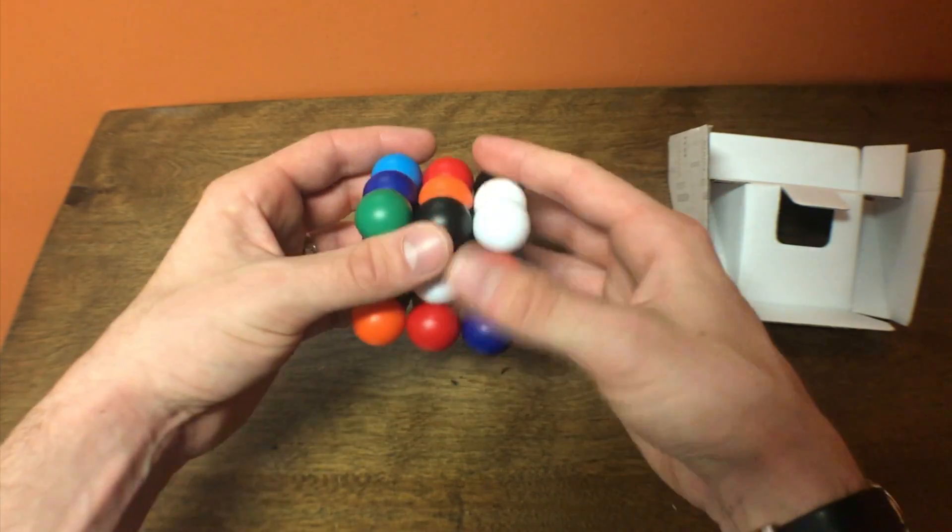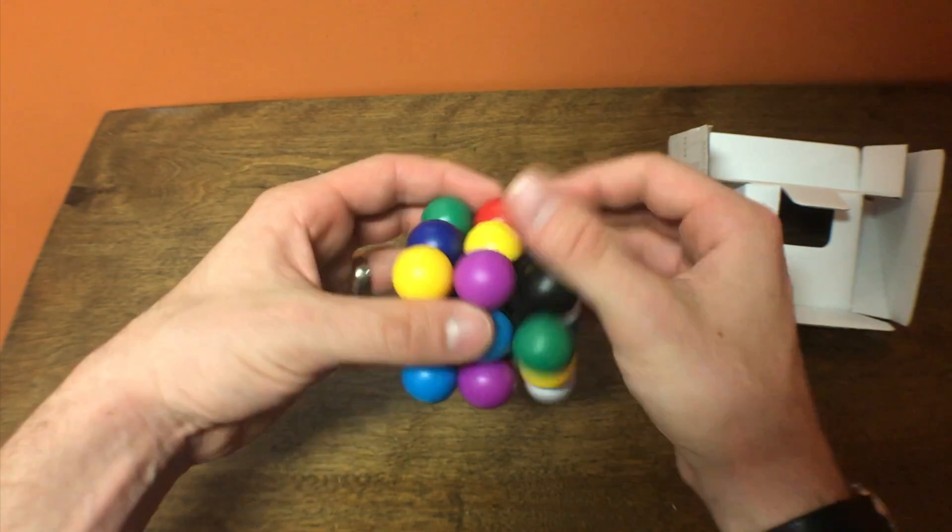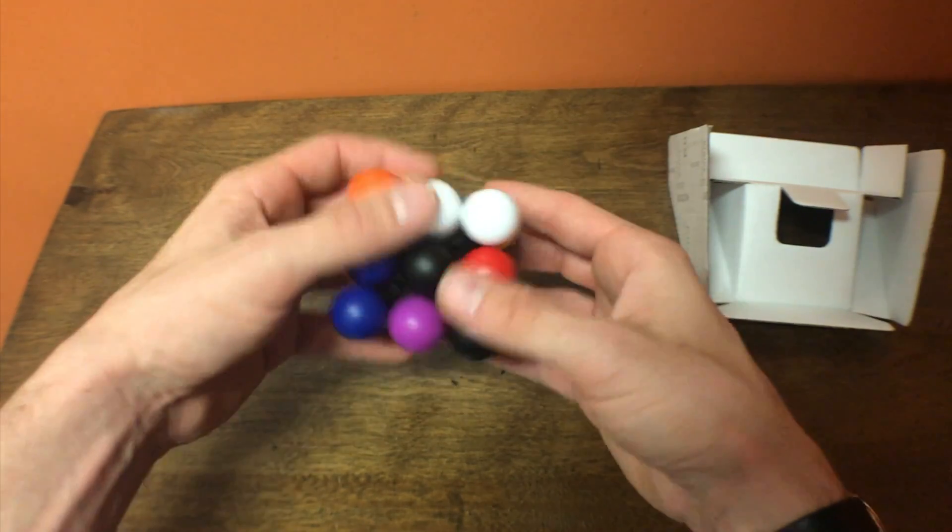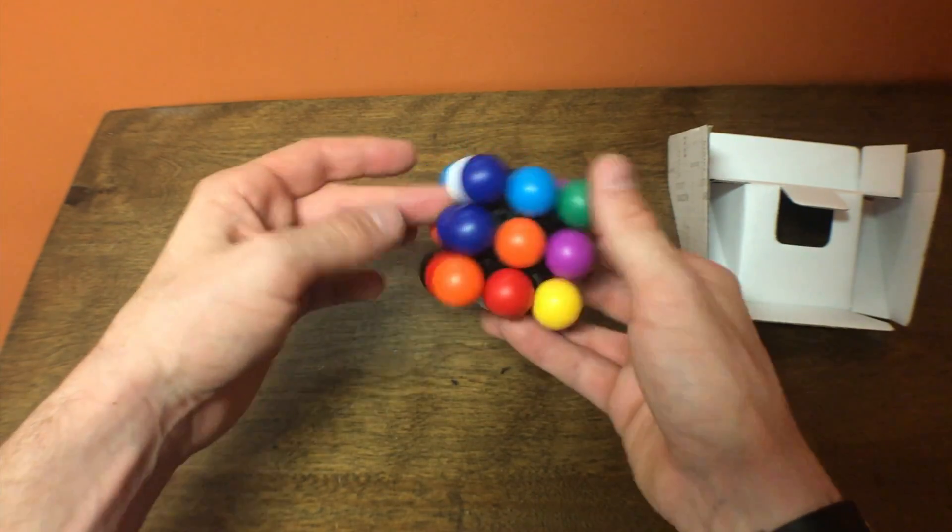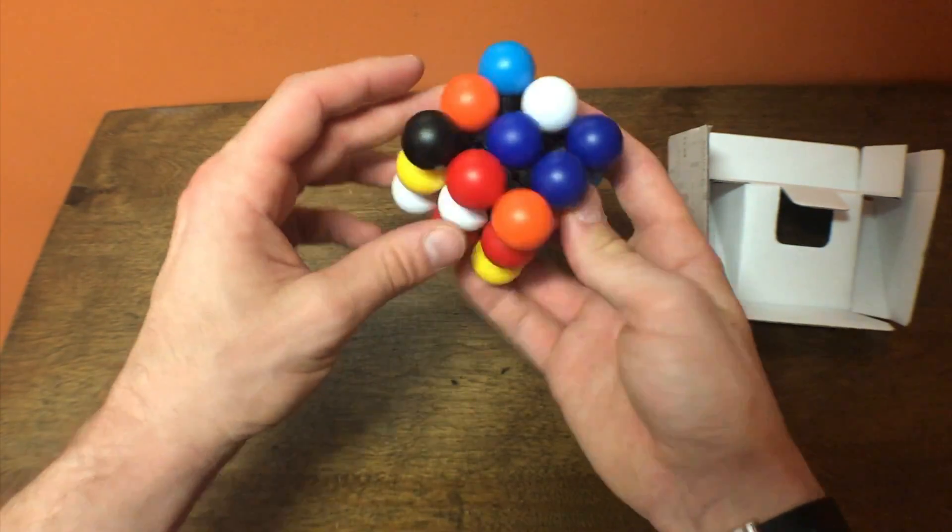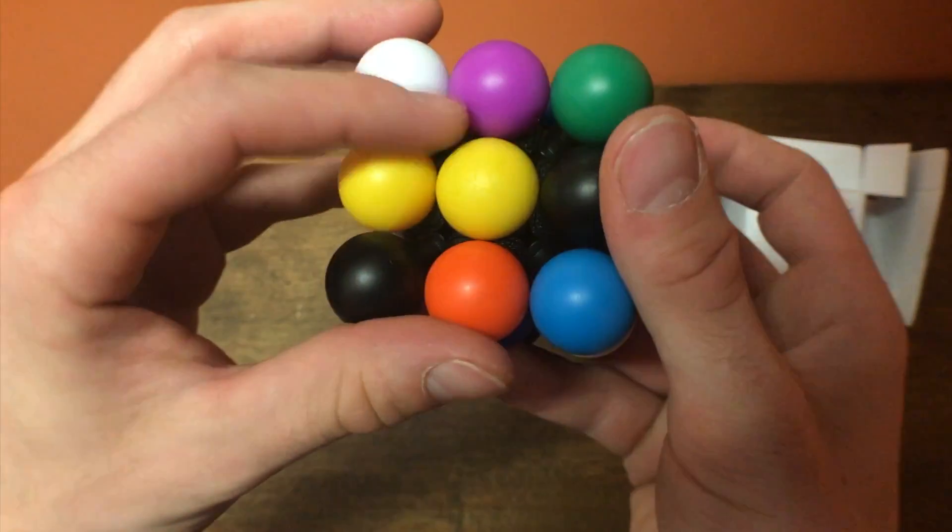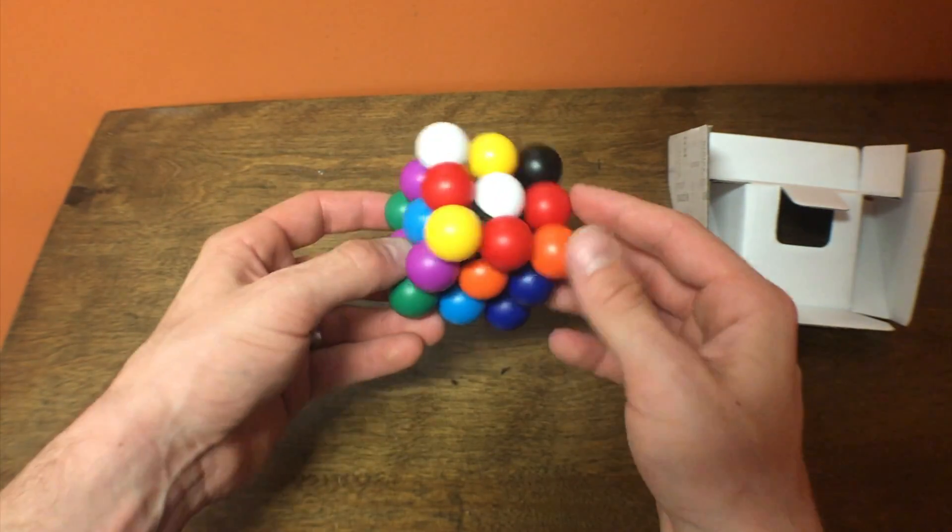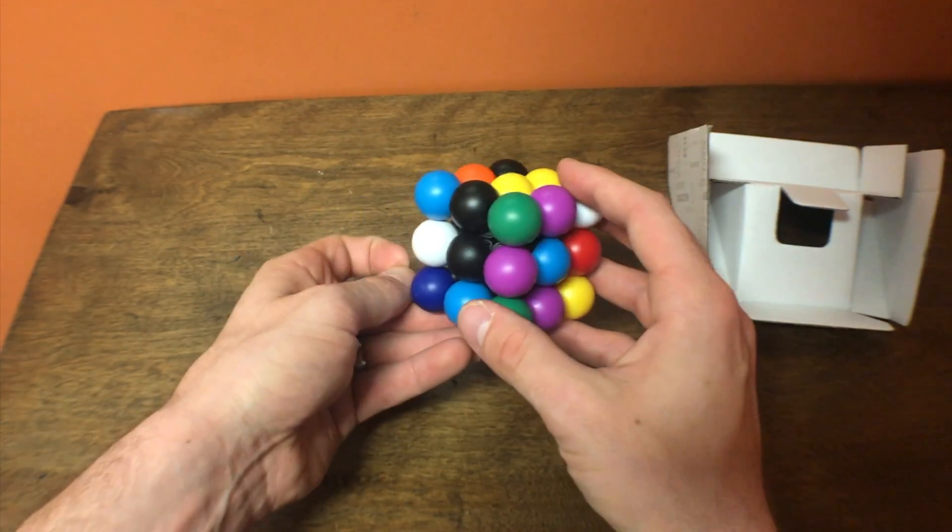But let's give it a scramble. Let's just right away mix this up. And to solve it, I haven't looked at any tutorials or anything. But let's just take a look at this. We've got each center is a different color - it looks like light blue, dark blue, orange, yellow, black, white. Oh, is that a logo? Yeah, it's a Mefferts logo. So this is a Mefferts puzzle. So every center is a different color. There's no red center and no purple center or green.